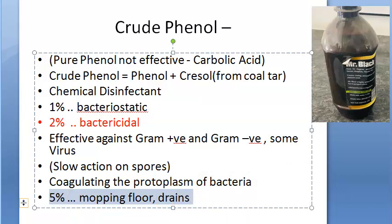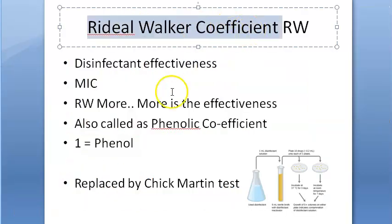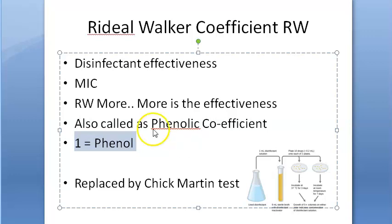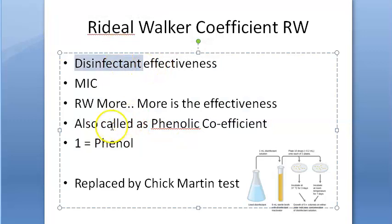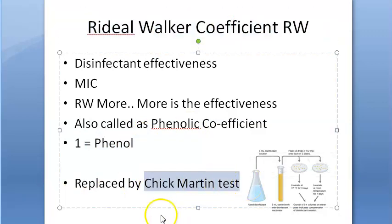In our video on the Rideal-Walker coefficient — also called the phenolic coefficient — all disinfectants are compared against phenol. A value of one means it has the same power as phenol; more than one means it is a better disinfectant. This test is no longer used now; it has been replaced by the Chick-Martin test.